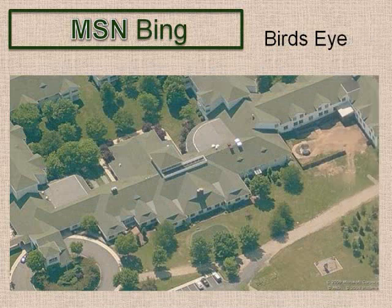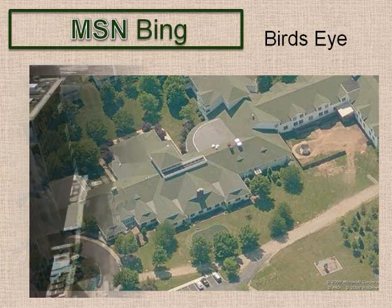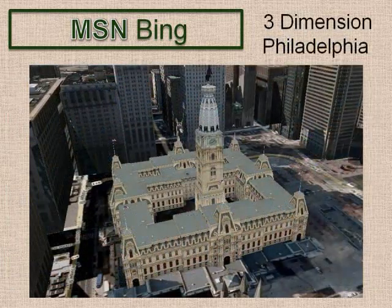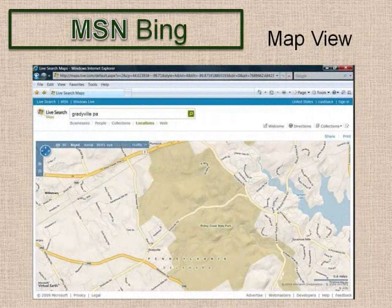Here is a bird's eye view of the clubhouse at Whitehorse Village. This is Philadelphia's City Hall in a 3D view. The road map view is generally used for getting directions. Instead of typing in start and end for directions, you can save time by clicking on the map to set the start and end.